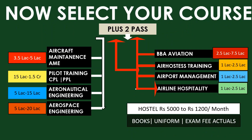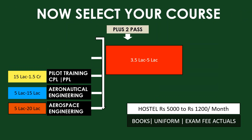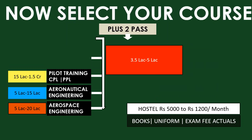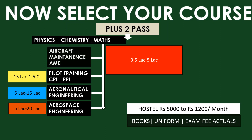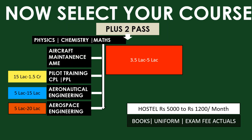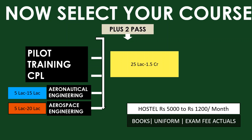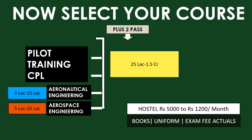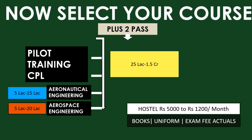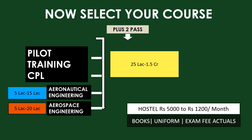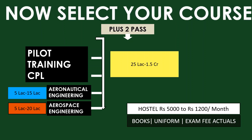Now you can select your course. After passing your Plus 2 with physics, chemistry and maths, you can choose Aircraft Maintenance Engineering. The fees will be around 3.5 lakh to 5 lakh for 3 years. There are around 53 colleges in India. Next is pilot training — after passing Plus 2 with physics and maths, you can choose CPL pilot training. The fees will be around 15 lakh to 1.5 crore for 1 to 3 years.